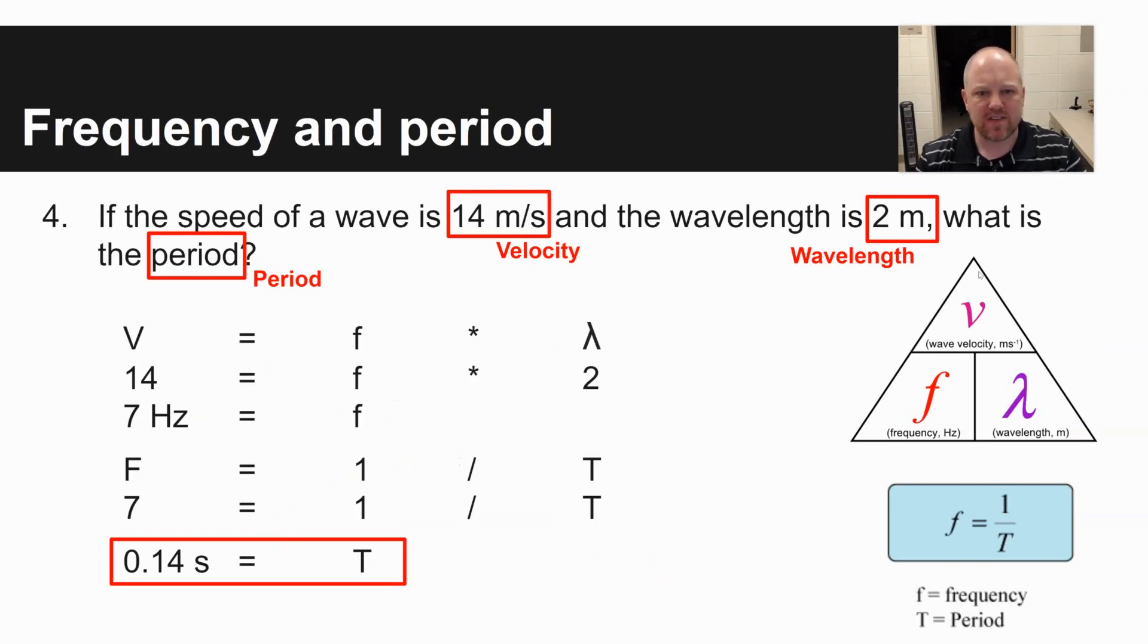Problem number four involves frequency and period. It says if the speed of a wave is 14 meters per second and the wavelength is two meters, what is the period? This is a little bit more complex problem because you need to use two equations. The velocity frequency wavelength equation that we've already used as well as the equation on the bottom, f is equal to one over t. And so the first thing you have to do is you have to solve for frequency so that you can solve for period.